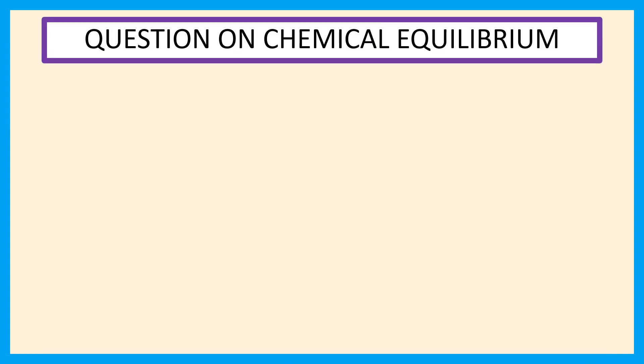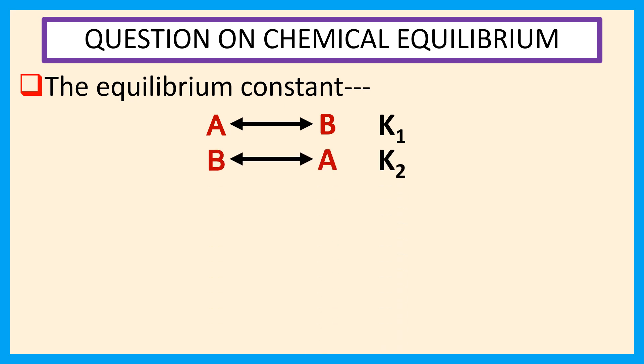Welcome, everyone. Question on chemical equilibrium. The equilibrium constant for the reaction A to B is K1, and for the reaction B to A is K2.